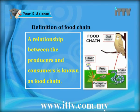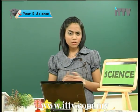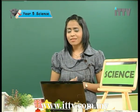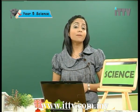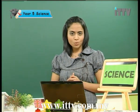What is the definition of food chain? A relationship between the producers and consumers is known as a food chain. In this picture, the producer is a flower. The consumers are the caterpillars, frogs, snakes and owls. In Year 5, all you need to know about the food chain is that it consists of producers and consumers. As you go further in secondary school, you would learn that consumers can be divided into primary consumer, secondary consumer and tertiary consumer.